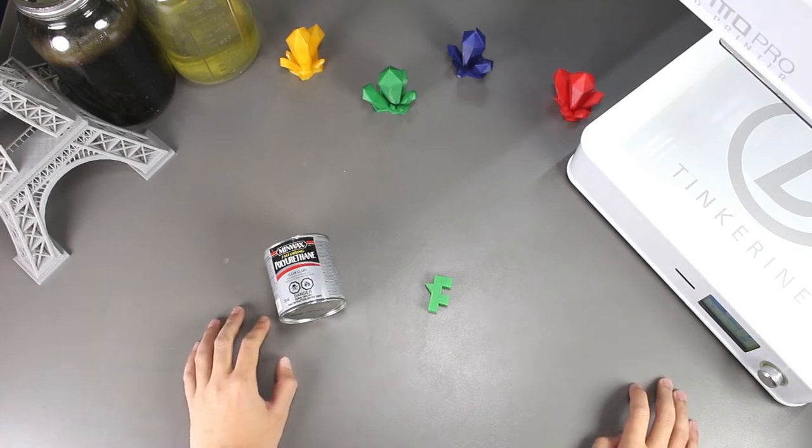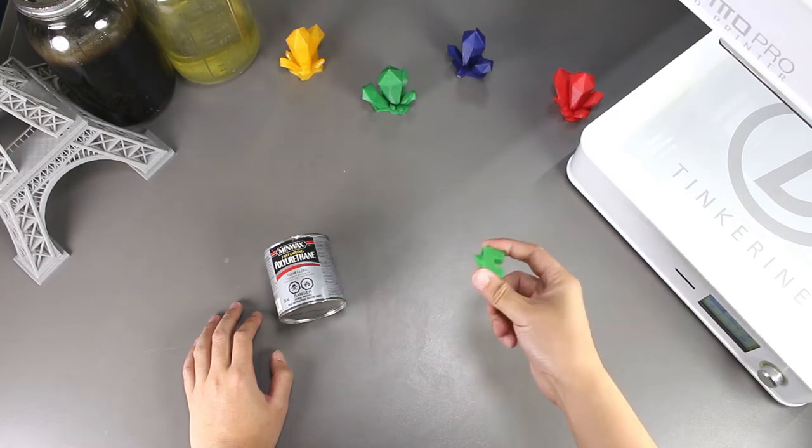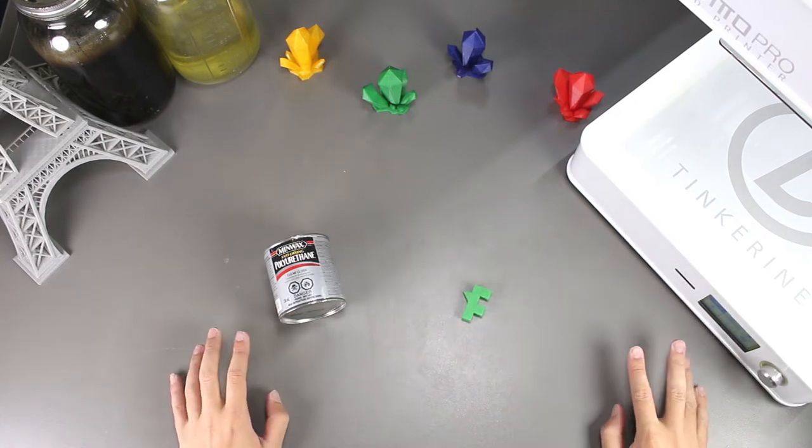Welcome to another episode of Tinkering Experience. In this episode, we are going to do an experiment on smoothing 3D printed PLA prints with polyurethane.